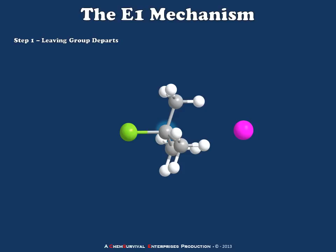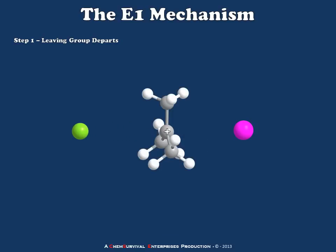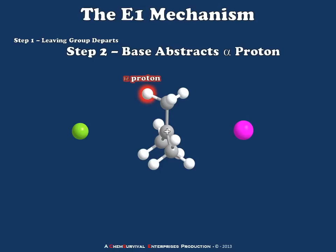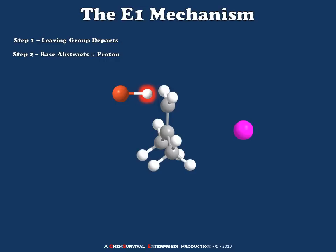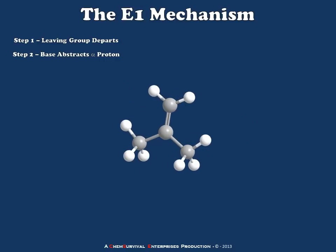But remember what we said about phosphate anions and similar species — their electron density is distributed so widely around the species that there really isn't a good nucleophilic site. So instead, it's going to react as a base. The base will abstract an alpha proton from our carbocation, and in doing so, it will initiate the formation of a pi bond between the alpha carbon and the carbocation center. We've created an alkene, or a hydrocarbon containing a double bond, by proceeding through a carbocation intermediate.